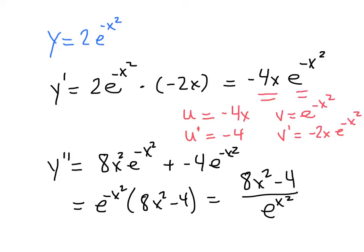The reason we wrote it as a fraction is that we need to find the zeros and undefined values of this function. To find the zeros of a fraction, we set the numerator equal to zero. e to the x squared will never equal zero — it's always positive — so all we have to worry about is the numerator. The only way a fraction can equal zero is if the numerator is zero. So we'll set 8x squared minus 4 equal to zero to locate the potential inflection points.